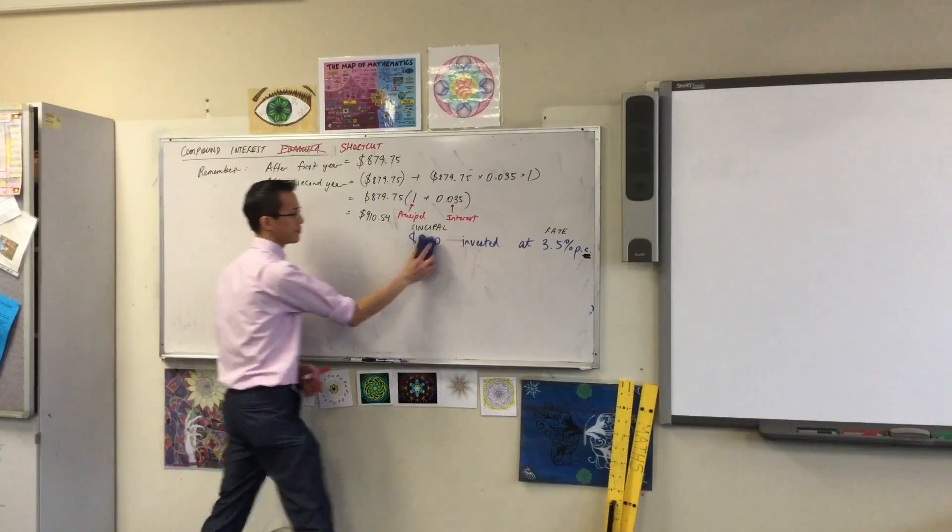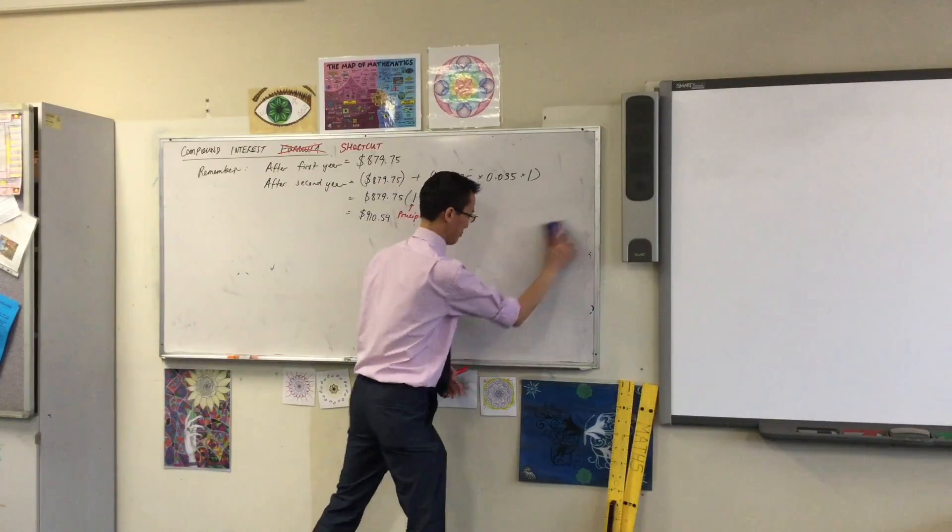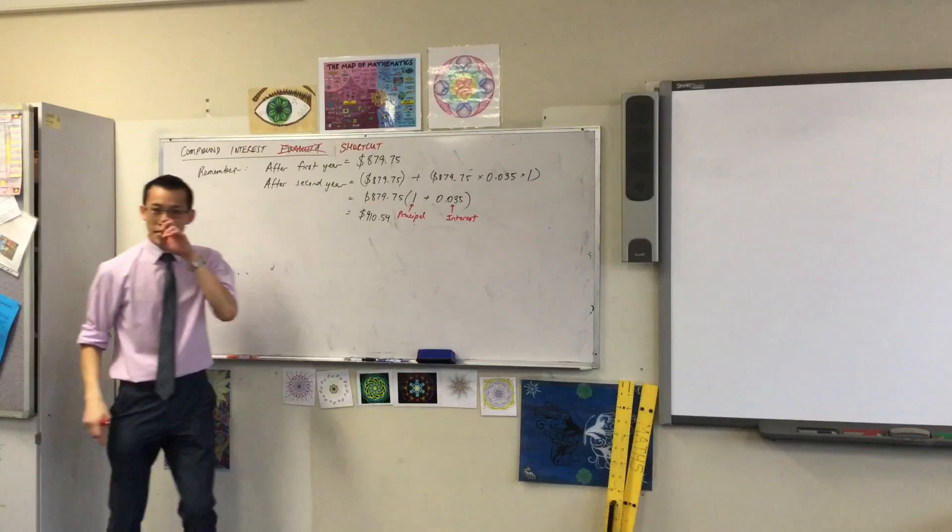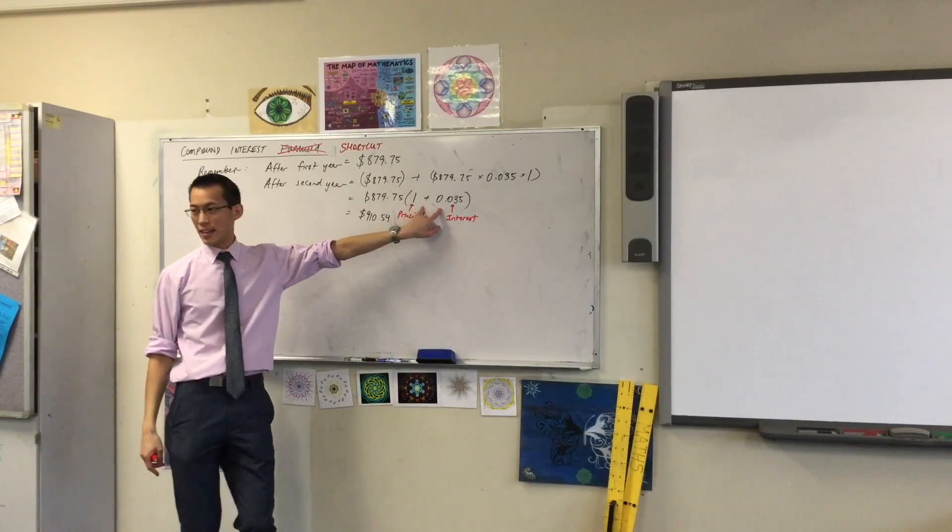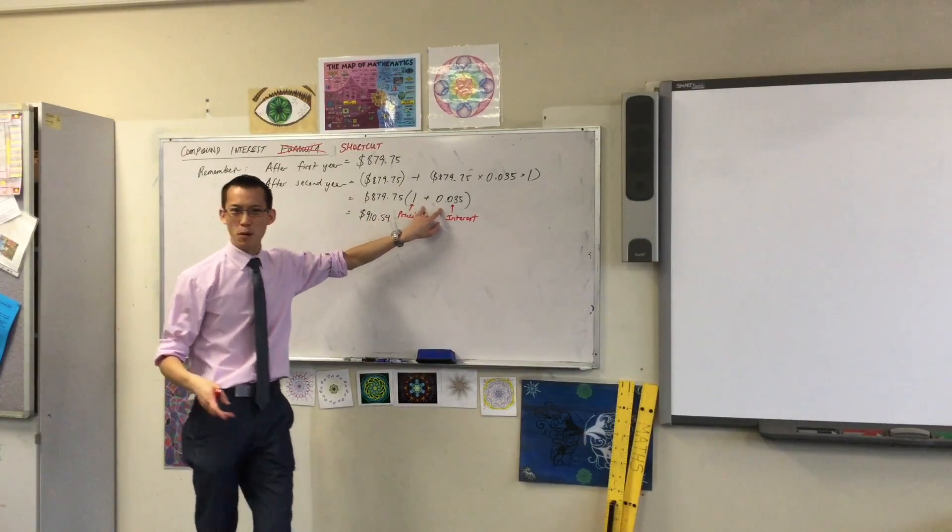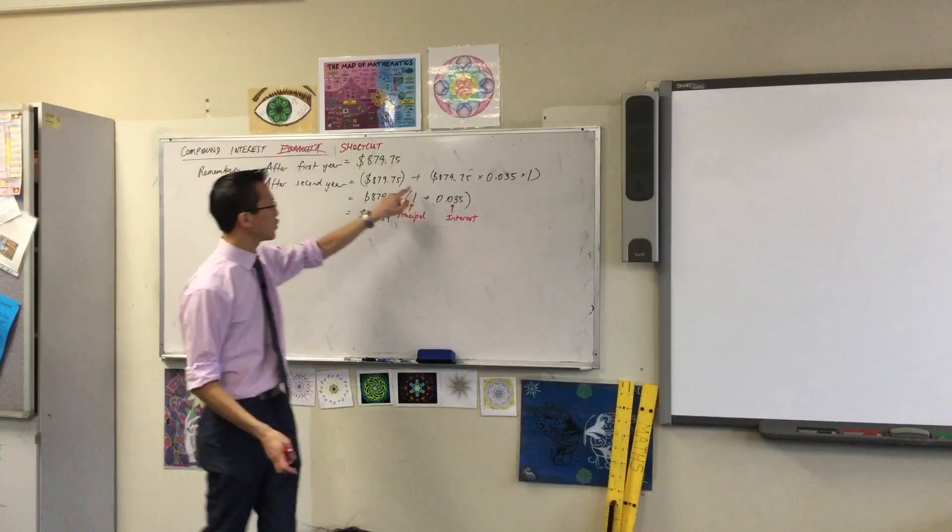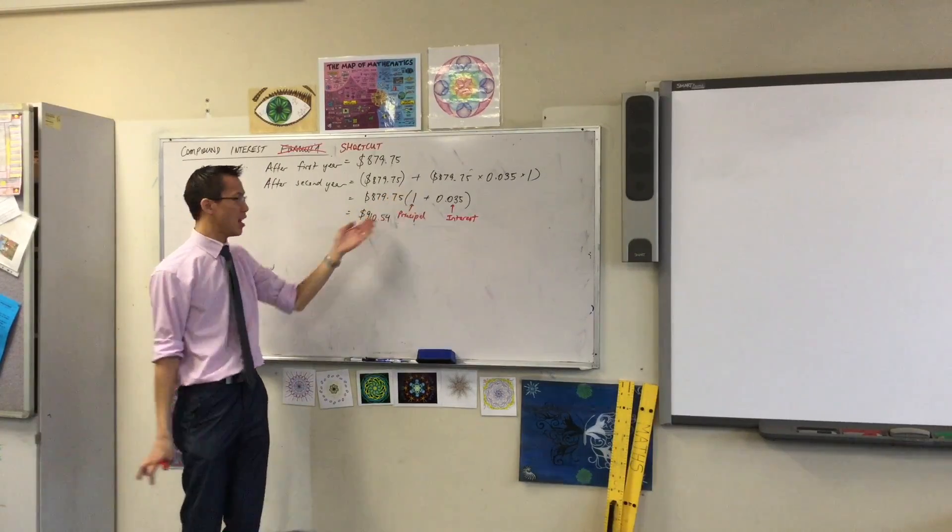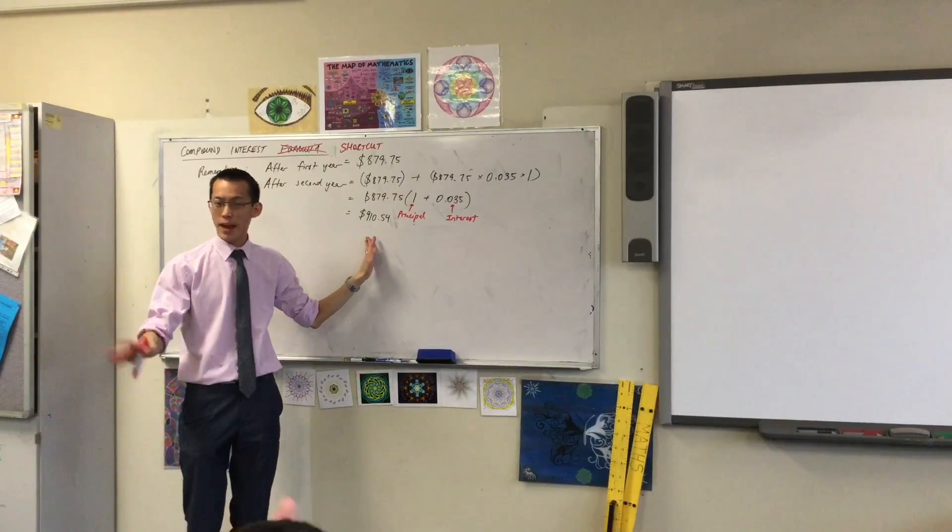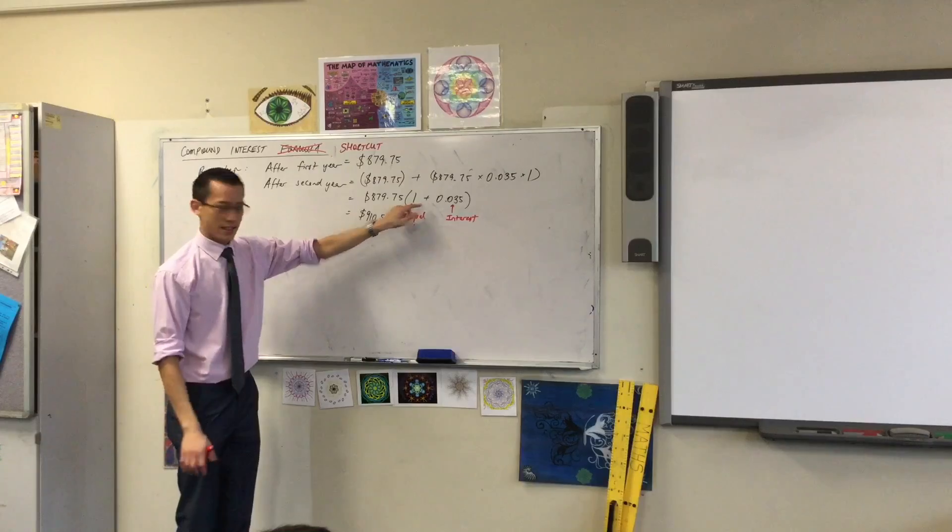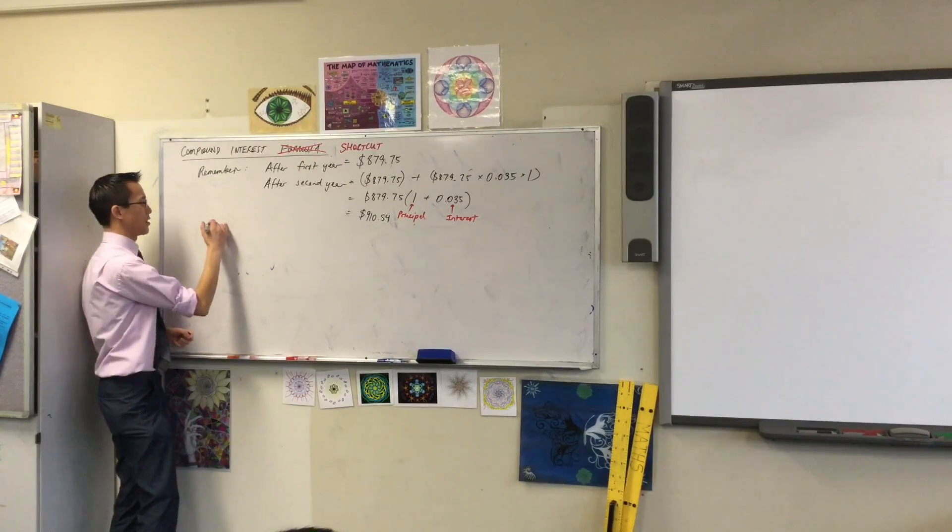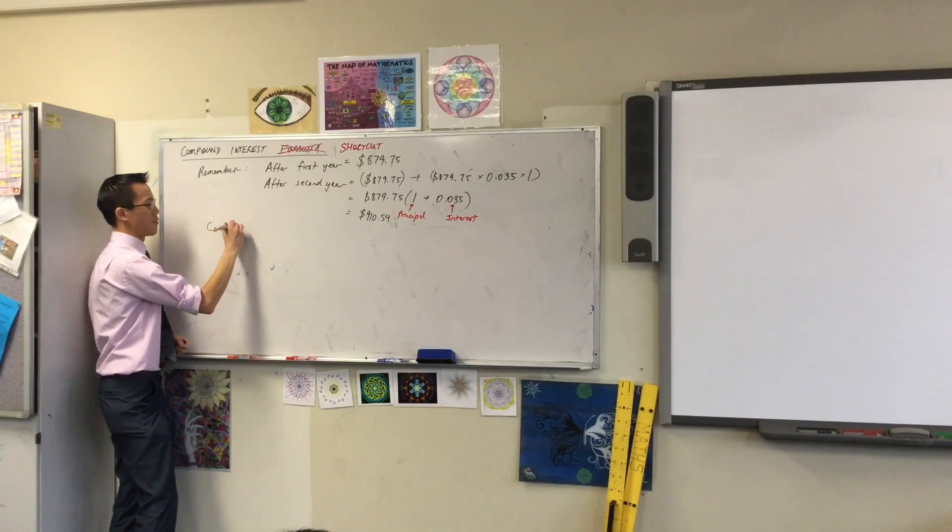The key is this line here. See, I factorized this and you were probably thinking, why did we factorize? You could have just put this into your calculator just fine. You would have got the answer out and would have been correct. This line is the key. Here's what I'd like you to write under a compound interest formula.